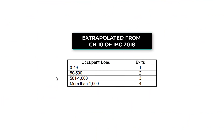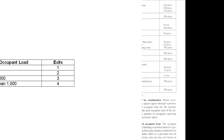The following table stipulates the number of exits for various occupancies: 0 to 49 occupants requires 1 exit; 50 to 500 requires 2 exits; 501 to 1,000 requires 3 exits; and more than 1,000 requires 4 exits.